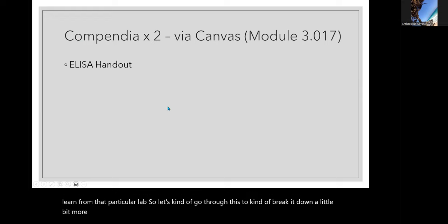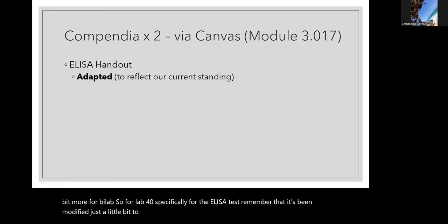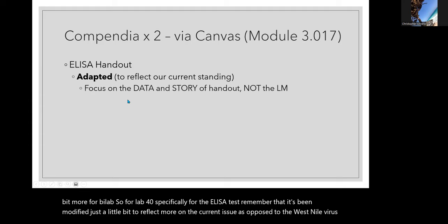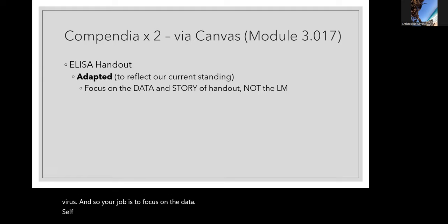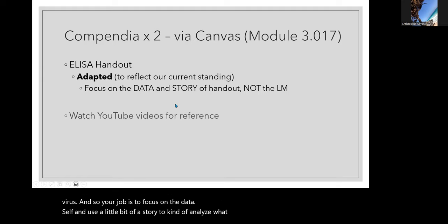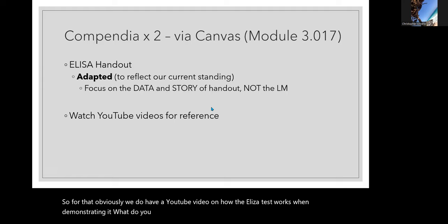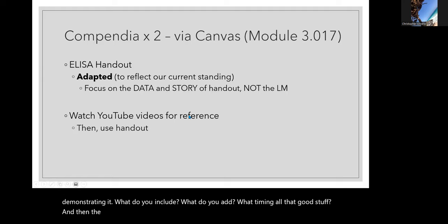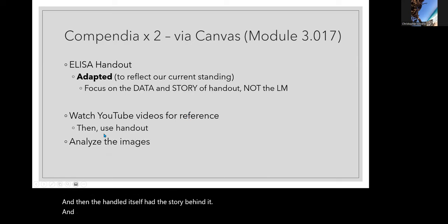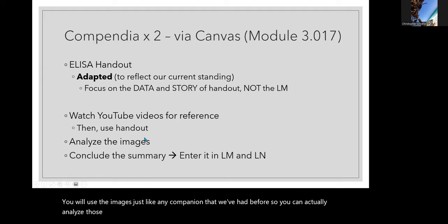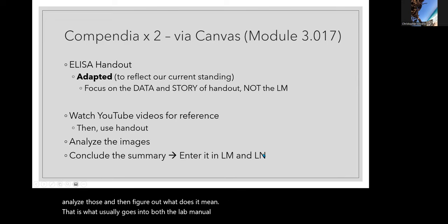For Lab 40 specifically, the ELISA test has been modified just a little bit to reflect more on a current issue as opposed to the West Nile virus, so your job is to focus on the data itself and use the story to analyze what's there. We have a YouTube video on how the ELISA test actually works — demonstrating it, what to include, timing, and so on. The handout has the story behind it, and after that you'll use the images just like any compendium we've had before to analyze and figure out what they mean.